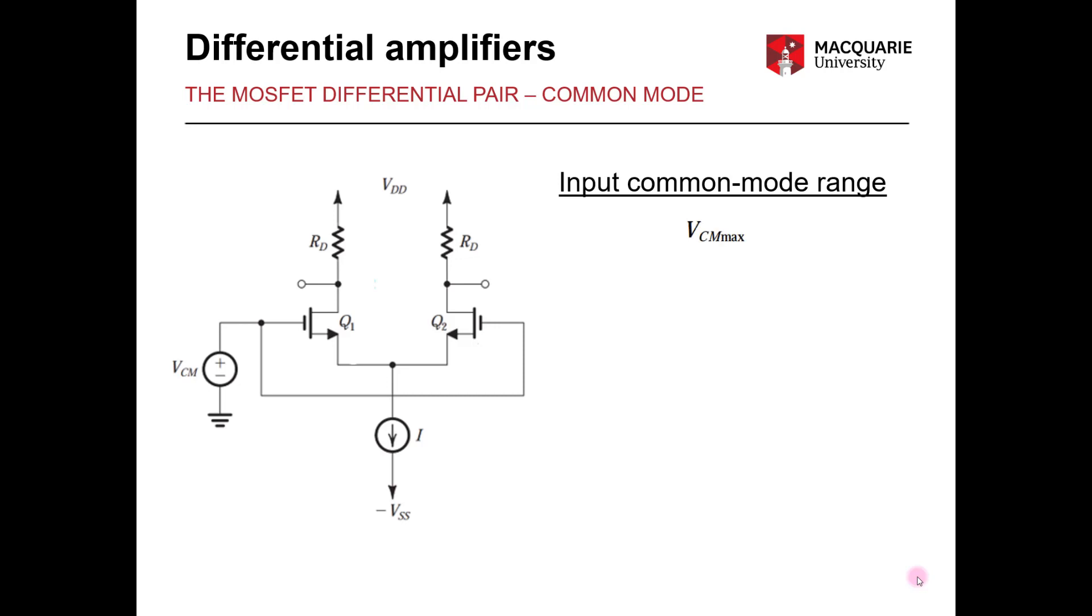We'll start by looking at the VCM max. So the maximum common mode voltage that we can apply to the MOSFET differential pair and still have the condition where it will be adequately rejected.